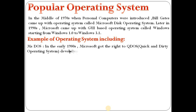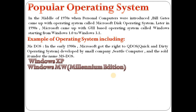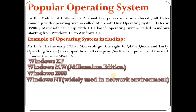In the early 1980s, Microsoft bought the rights of QDOS — that is Quick and Dirty Operating System — which was developed by a small company called Seattle Computer Products, and sold it under the name Microsoft DOS operating system. Examples of very popular operating systems include Windows XP, Windows NT, Millennium Edition, Windows 2000 — which is widely used as a server edition — and Windows NT, which is widely used in network environments. The most popular operating systems also include Unix and Linux.